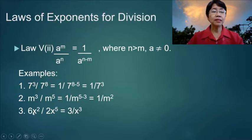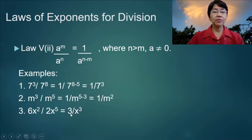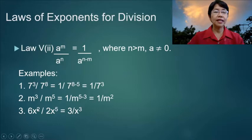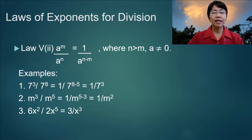Number 3: 6x squared divided by 2x to the fifth is equal to 3 over x cubed. So you divide 6 by 2, that's 3. Then x squared divided by x to the fifth goes to the denominator, and you subtract 5 minus 2. So 3 over x cubed is the final answer.